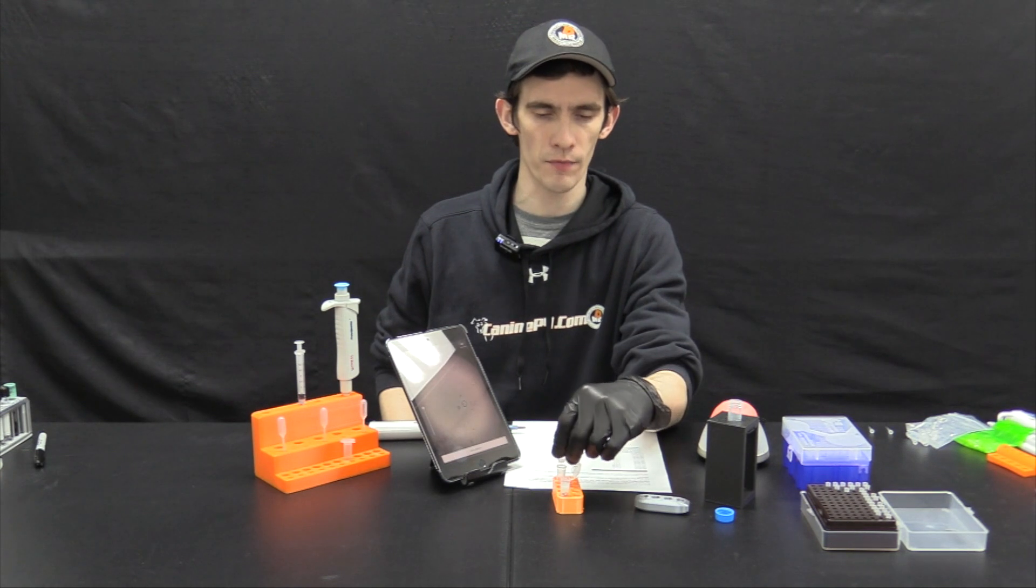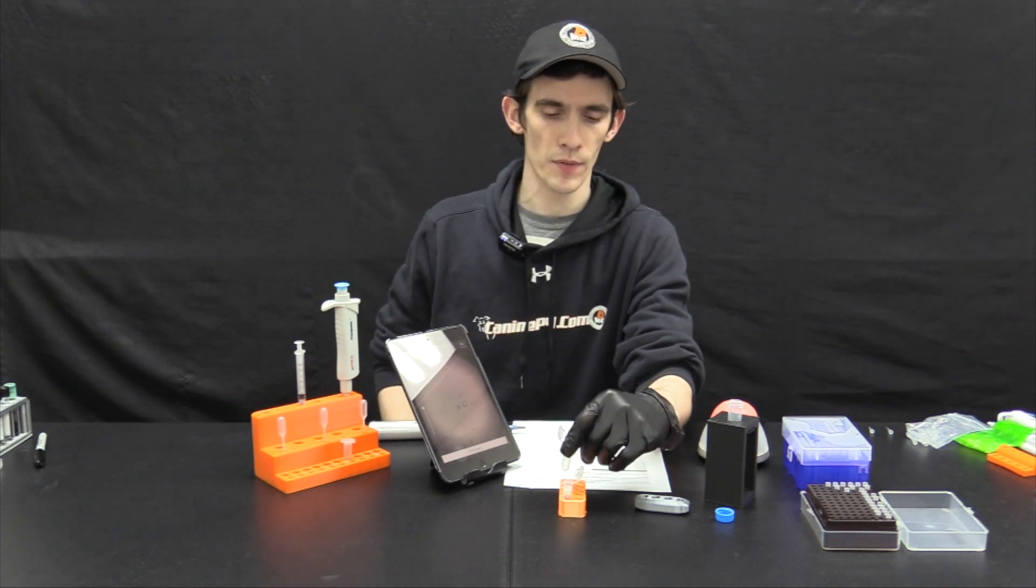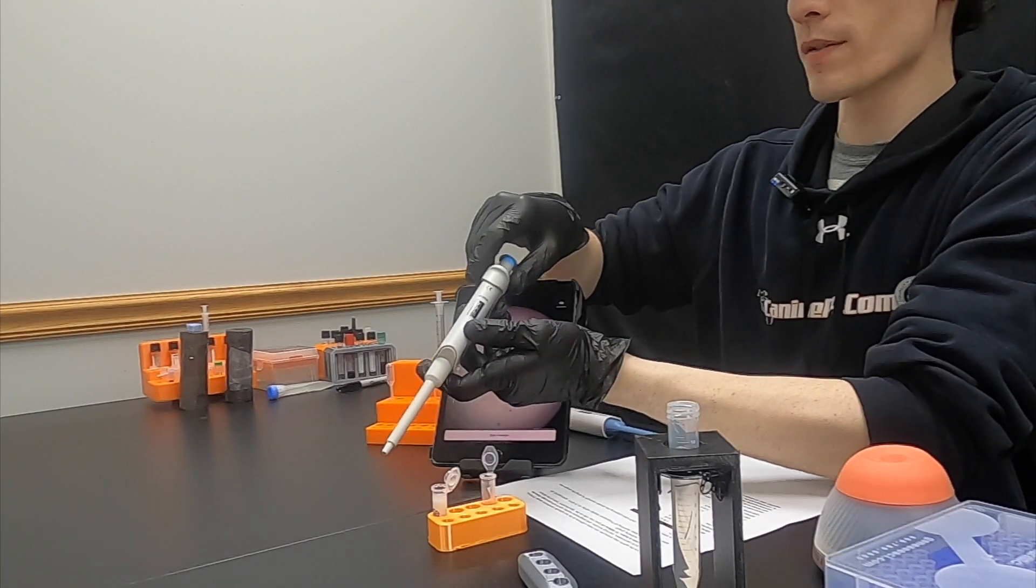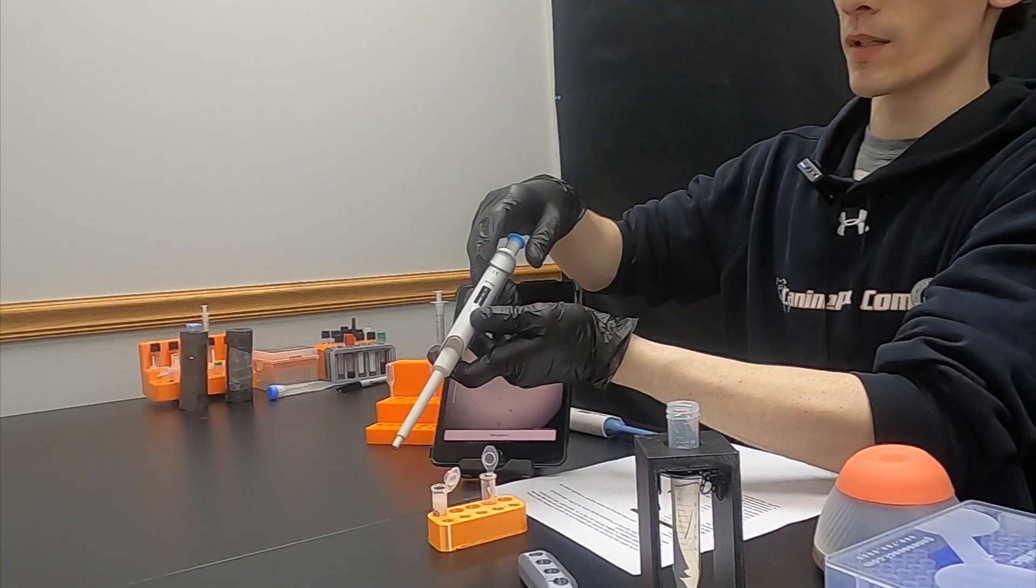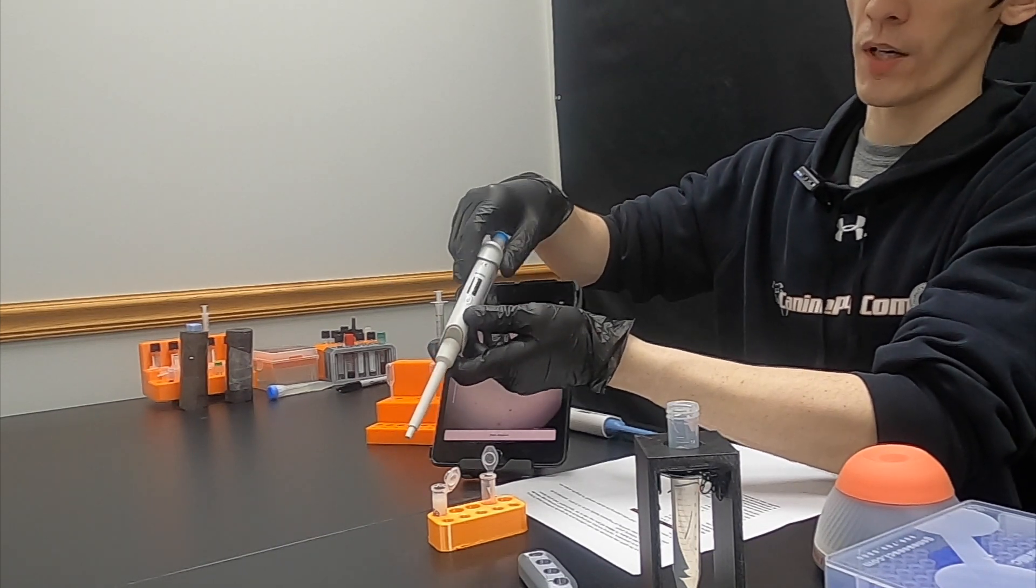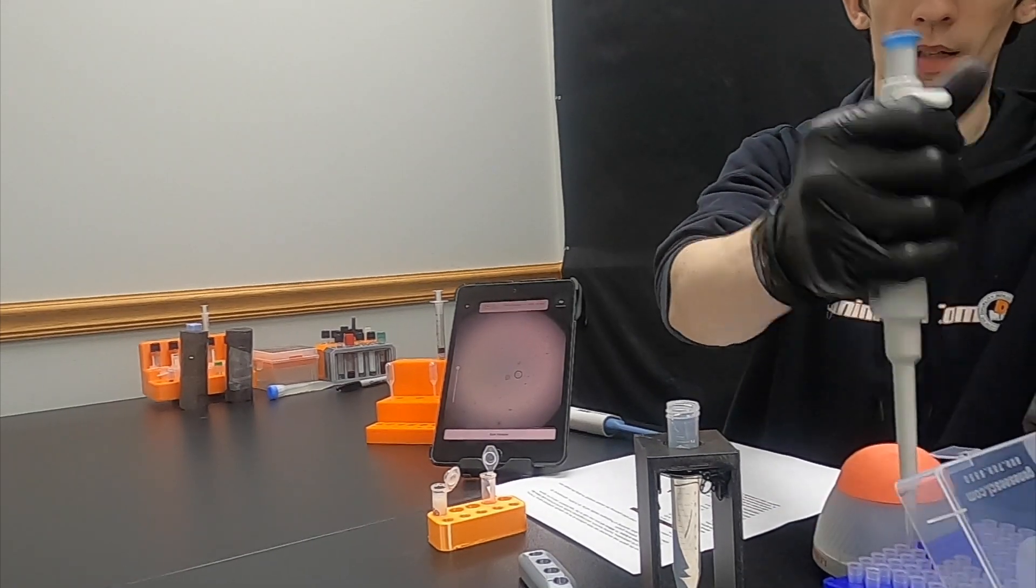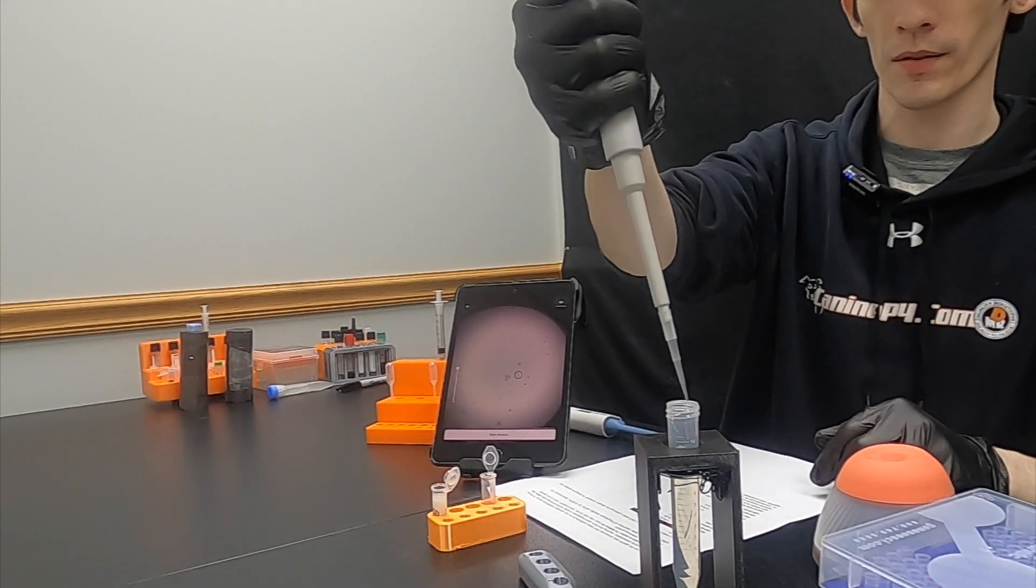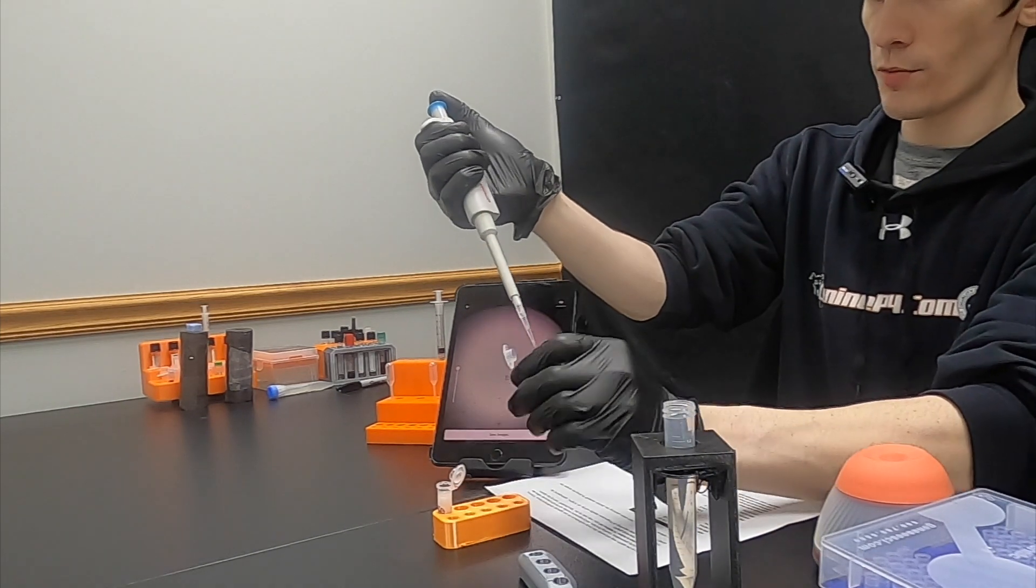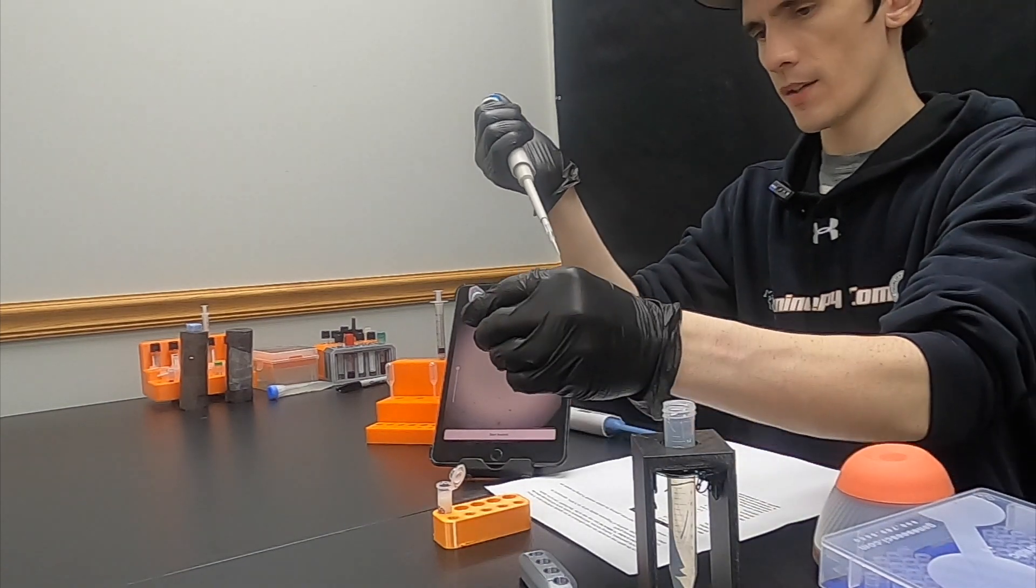So first, and always first, add the extender or saline to the dilution tube first. So to do this amount of 200 microliters we're going to use an exact tool, a mechanical pipette set to 200 microliters. Place a new tip on and go down to the first stop and dispense the 200 into the tube.